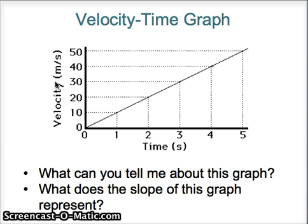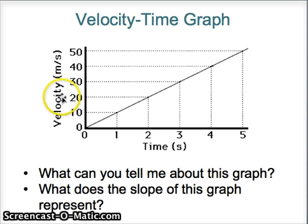Now, with a different graph, what can you tell me about this graph, and what can you tell me about the slope of this graph? I'll be using this graph again in class when we talk about velocity-time graphs on Thursday. Go ahead and hit pause and try to write down as many things as you can about this graph. Remember, this is not a position-time graph but a velocity over time graph. Pay particular attention to the first question: what can you tell me about this graph in detail?